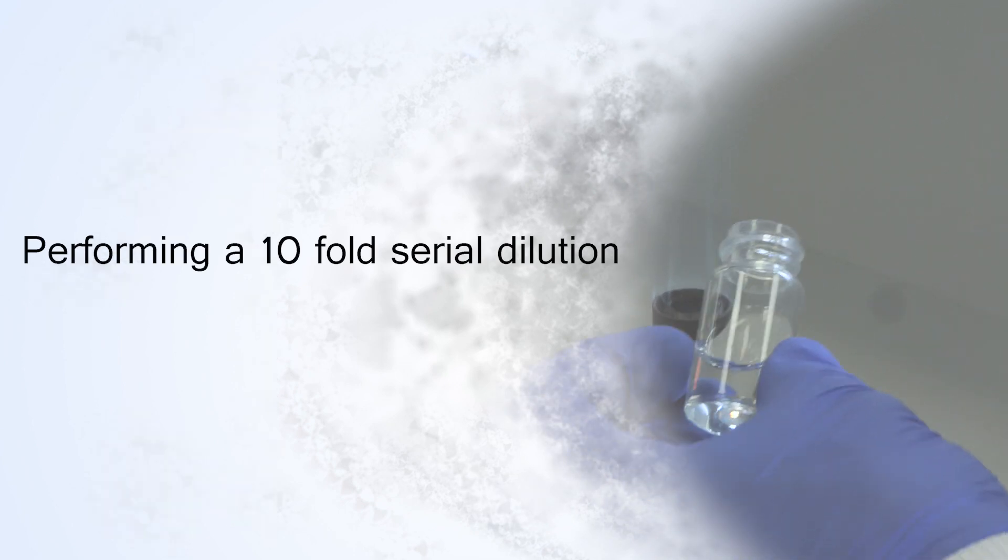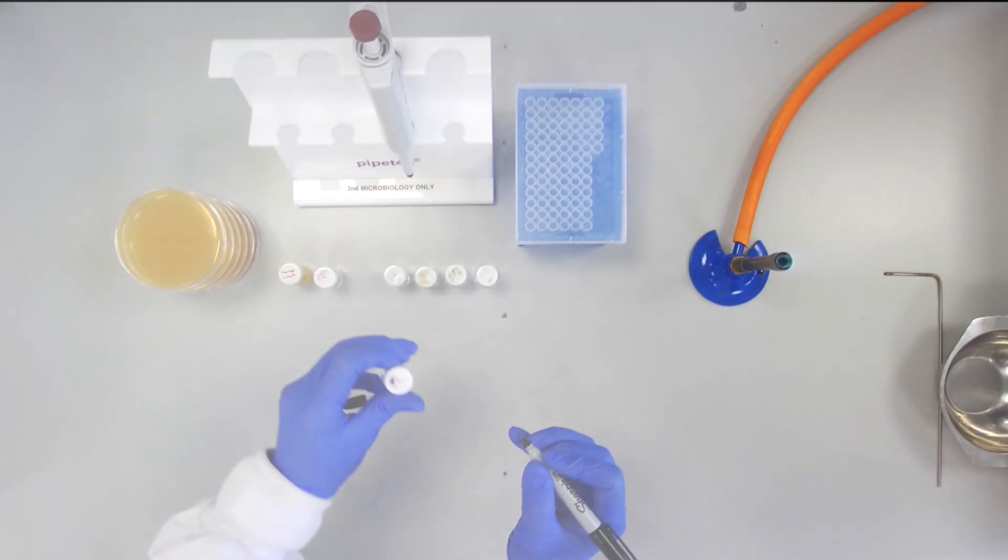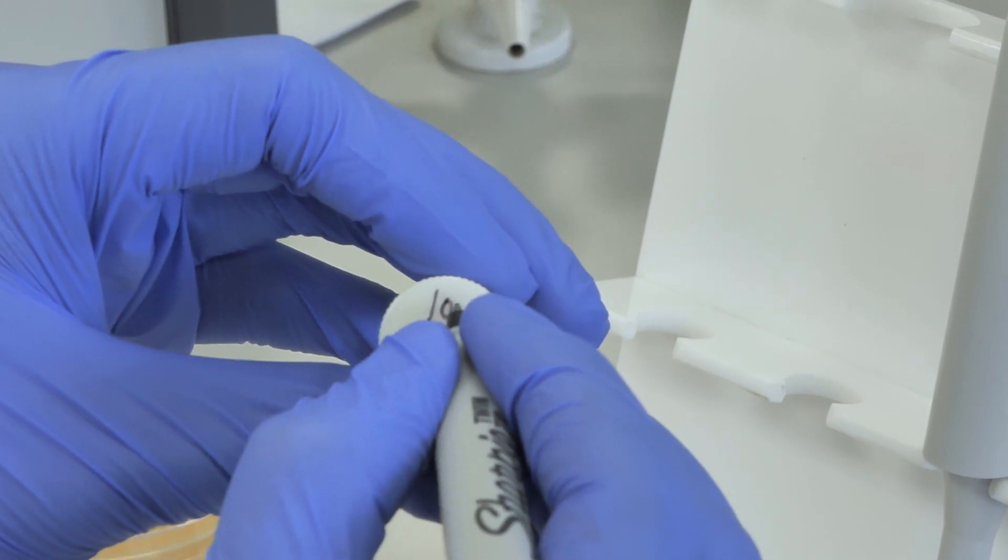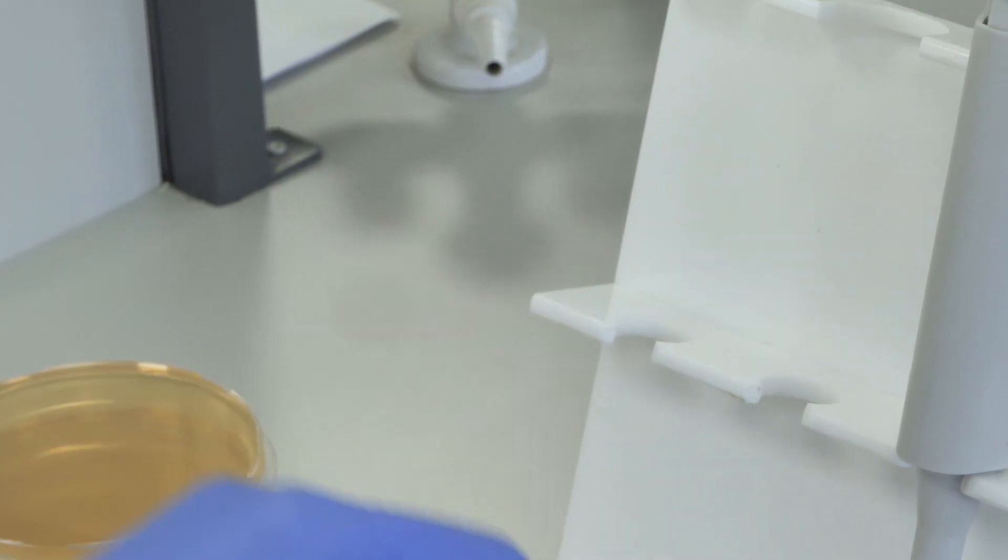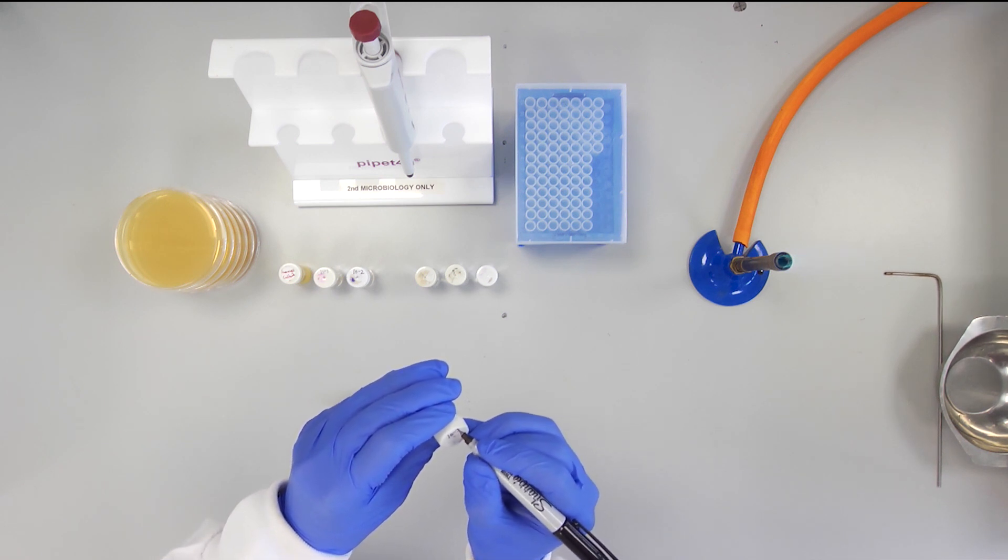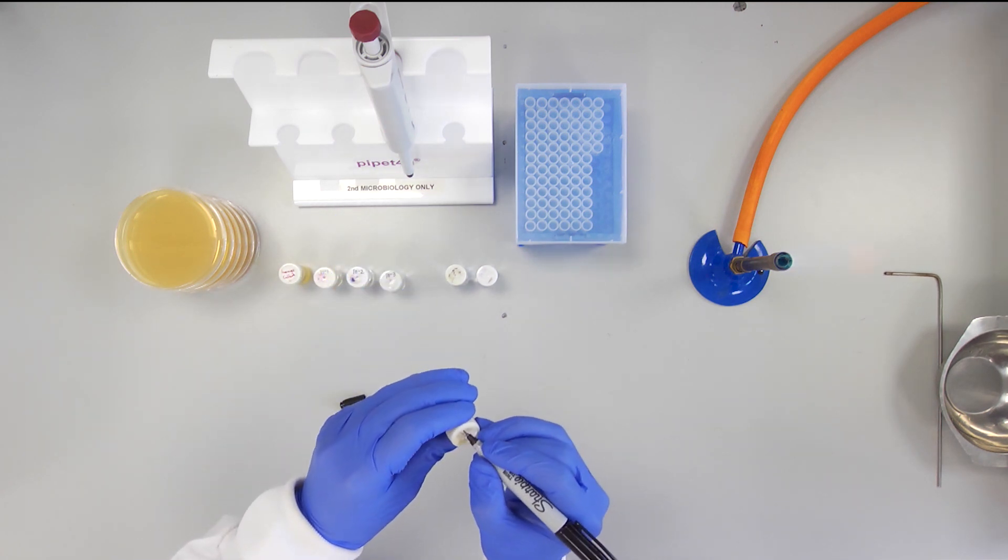Performing a tenfold serial dilution. Good organization is critical to the success of this experiment. In order to perform the serial dilution and spread plating to ascertain the number of bacteria present in an overnight culture, the following is required.